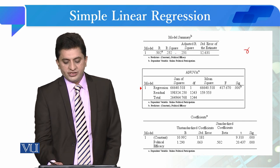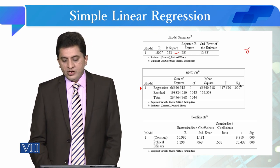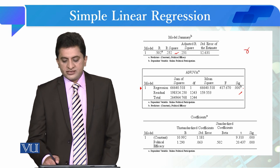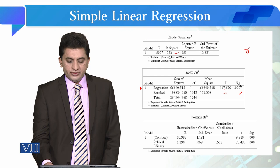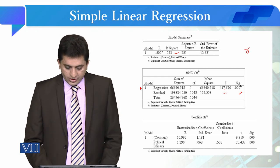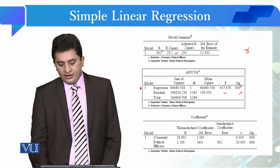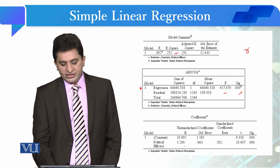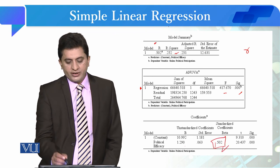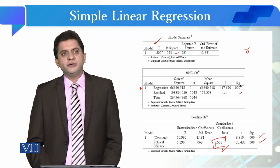If we square this R, we get the R-square value. After this we have the ANOVA table for model fit. We can see that the model is fit because the significance value is less than 0.05. The F value is calculated by dividing regression by residual. In the coefficients table, we have the constant, political efficacy has a beta of 1.290, and the standardized coefficient beta is 0.50 — which is the same as R — and both are statistically significant.